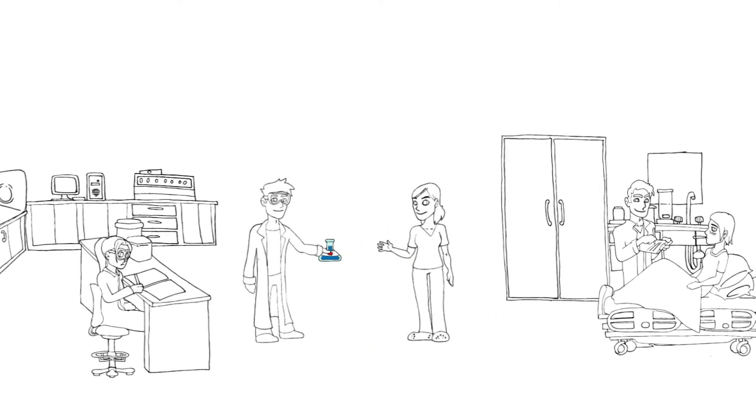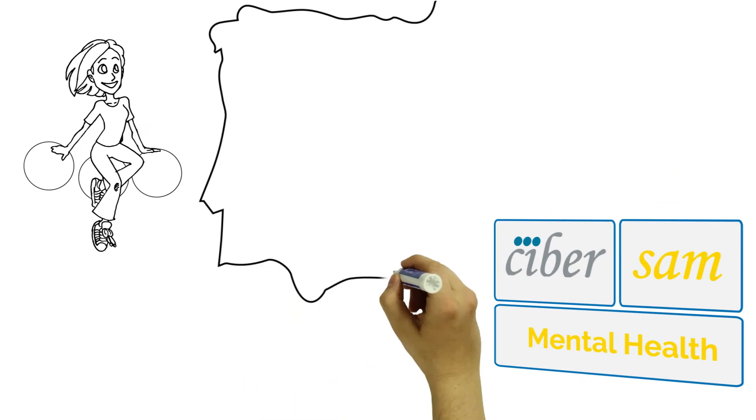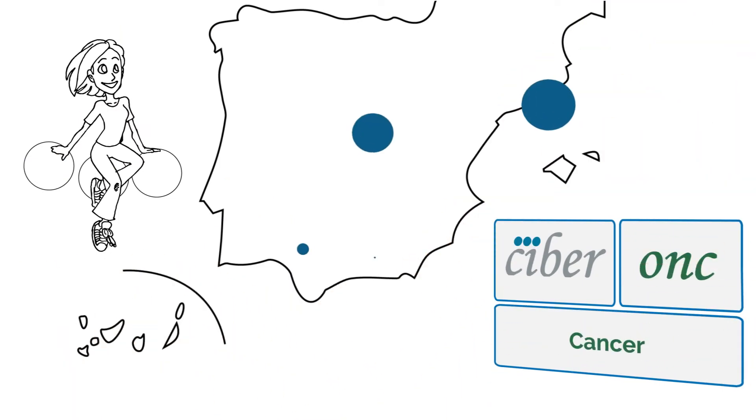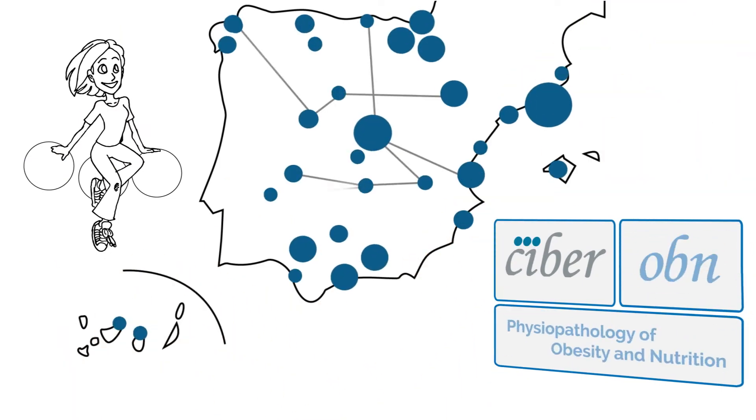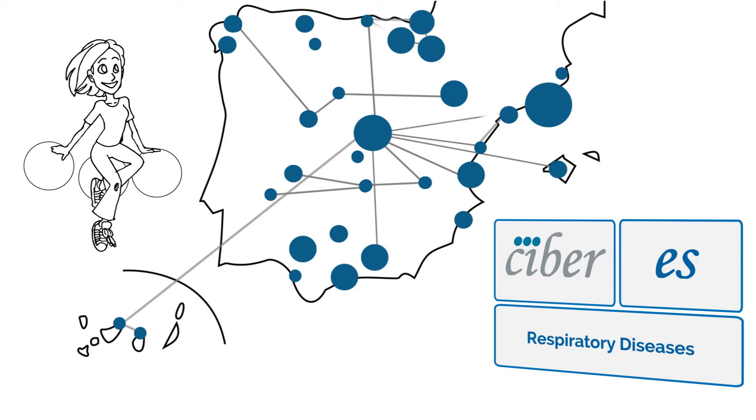Working together we avoid efforts duplications achieving results that would have been impossible otherwise. CIBER gathers 11 health research areas and has presence in almost every Spanish region. Their groups of excellence work together in different research programs.